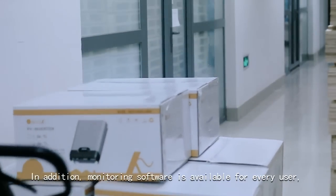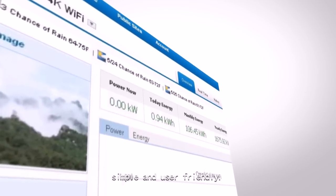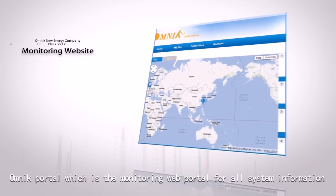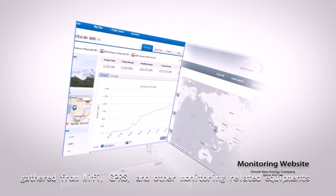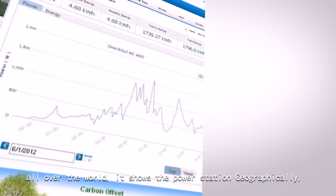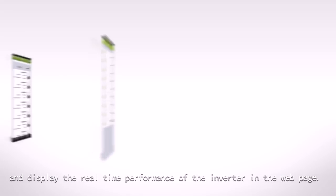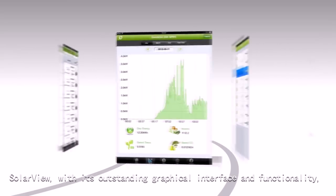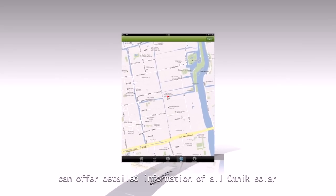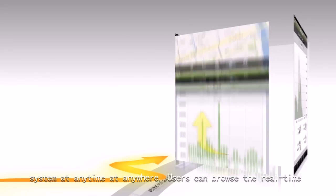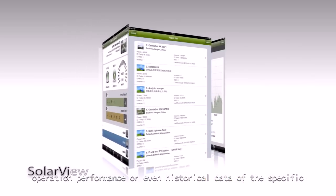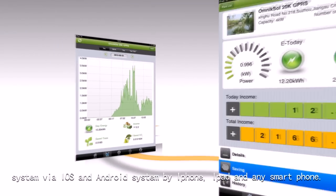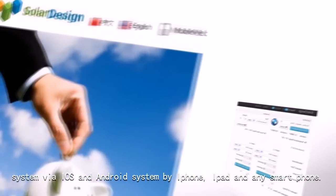Monitoring software is available for every user. Simple and user-friendly Omnic Portal is the monitoring web portal for all system information gathered from Wi-Fi, GPRS, and other monitoring-related equipment worldwide. It shows the power station geographically and displays real-time performance of the inverter. Solar View, with its outstanding graphical interface and functionality, offers detailed information of all Omnic solar systems at any time and anywhere. Users can browse real-time operation performance or historical data via iOS and Android systems by iPhone, iPad, and any smartphone.